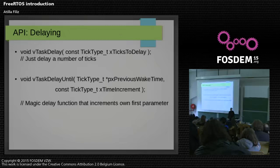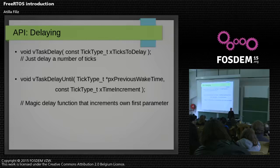An important part of the API is delaying. There are two functions. One is the simple delay — you call it and your task gets delayed a number of ticks you pass. And there is a smarter function called vTaskDelayUntil, which takes two parameters: previous wake time and an increment. It automatically increments its own previous wake-up time so the task always fires periodically.